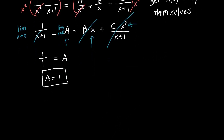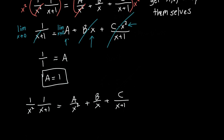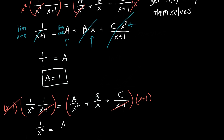Now let's do the same thing for C. We rewrite the equation: 1 over x squared times 1 over x plus 1 equals A over x squared plus B over x plus C over x plus 1. Now we multiply both sides by x plus 1. The x plus 1 terms cancel on A and on C, and we're left with 1 over x squared on the left, and A over x squared times x plus 1, plus B over x times x plus 1, plus C on the right.